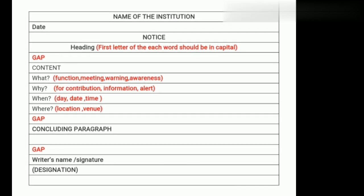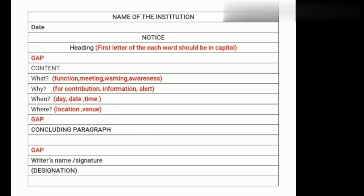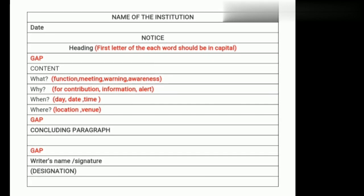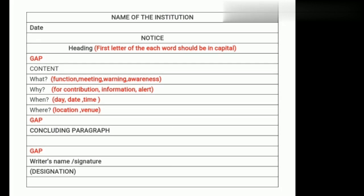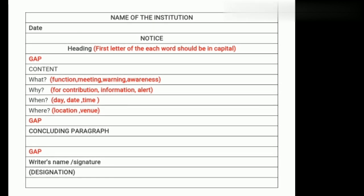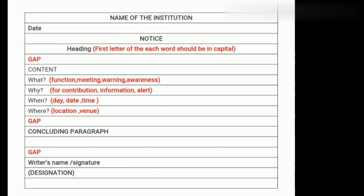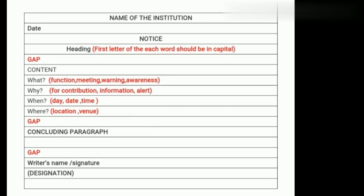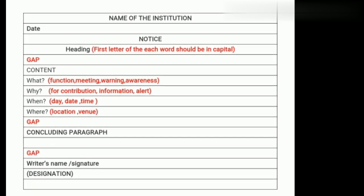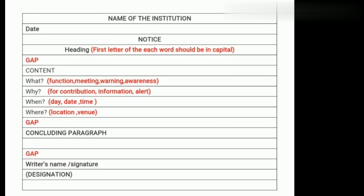After writing the four points — name of the institution, date, 'Notice', and heading — you all have to leave a line. Then you write the content, which you might wind up within three or three and a half lines. Then you leave a line again. After that you write the concluding paragraph, which could be one line or one and a half lines, not more than that. After that you leave a line, and then comes the signatory section — signature and designation.